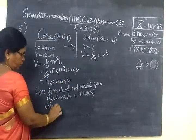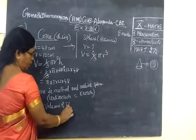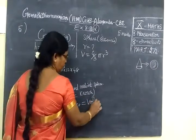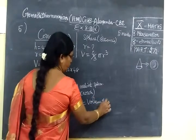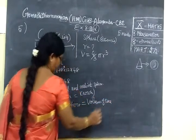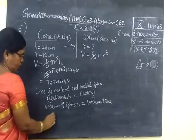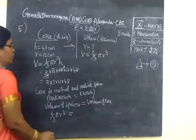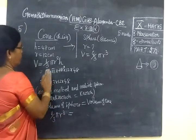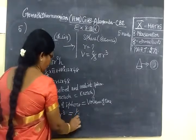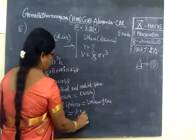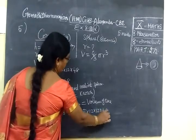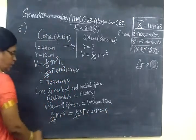Therefore, volume of sphere equals volume of cone. Volume of sphere: 4 by 3 π r³, equal to 1 by 3 π into 12 into 12 into 48. 3 cancel, π cancel.